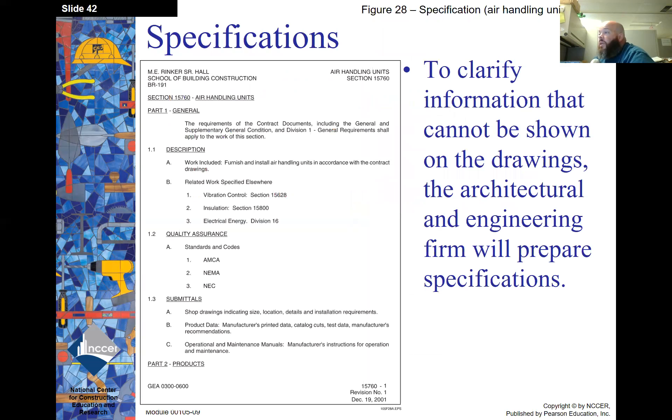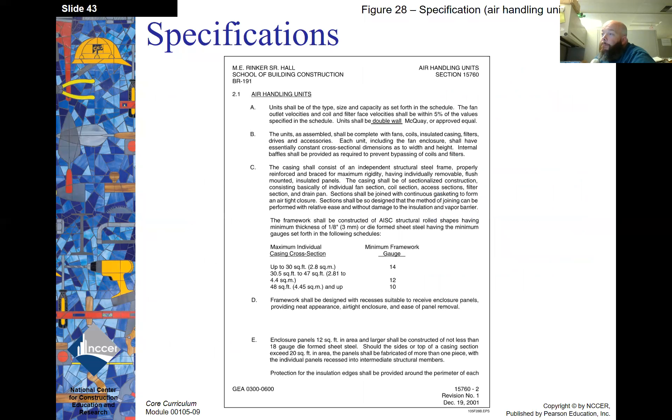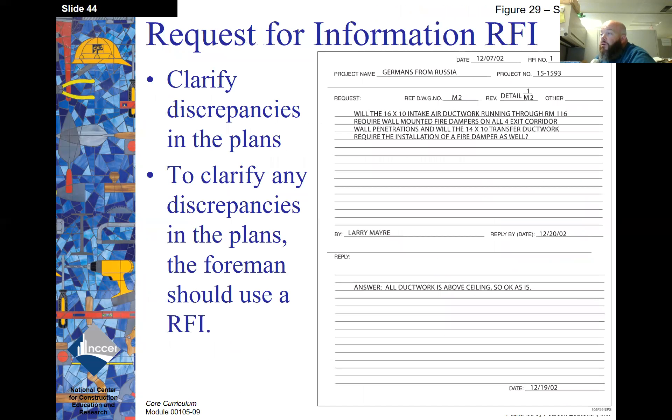Specifications. To clarify information that cannot be shown on the drawing, the architect and engineering firm will prepare specifications. Request for RFI. So a request for information or an RFI. These are to clarify discrepancies in the plans and to clarify any discrepancies in the plans, the foreman should use an RFI.